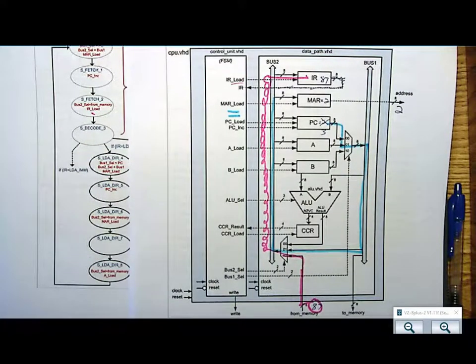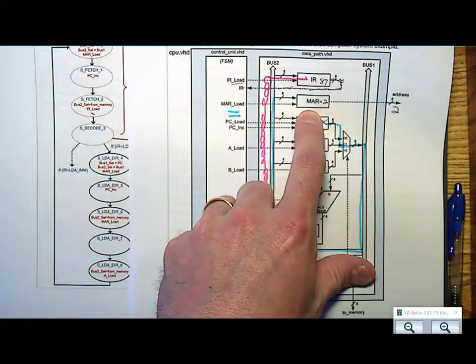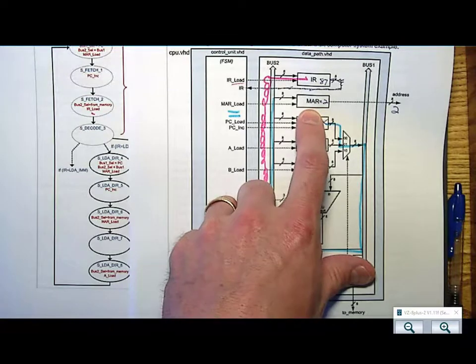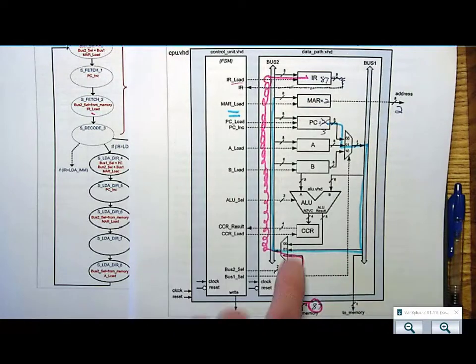Direct means I need to put some states in my machine to go get the operand, but I know that it's an address. So I'm going to take that address, and I'm going to put it back on the memory address register. Then I'm going to go read from that address and get the contents and put it into A.